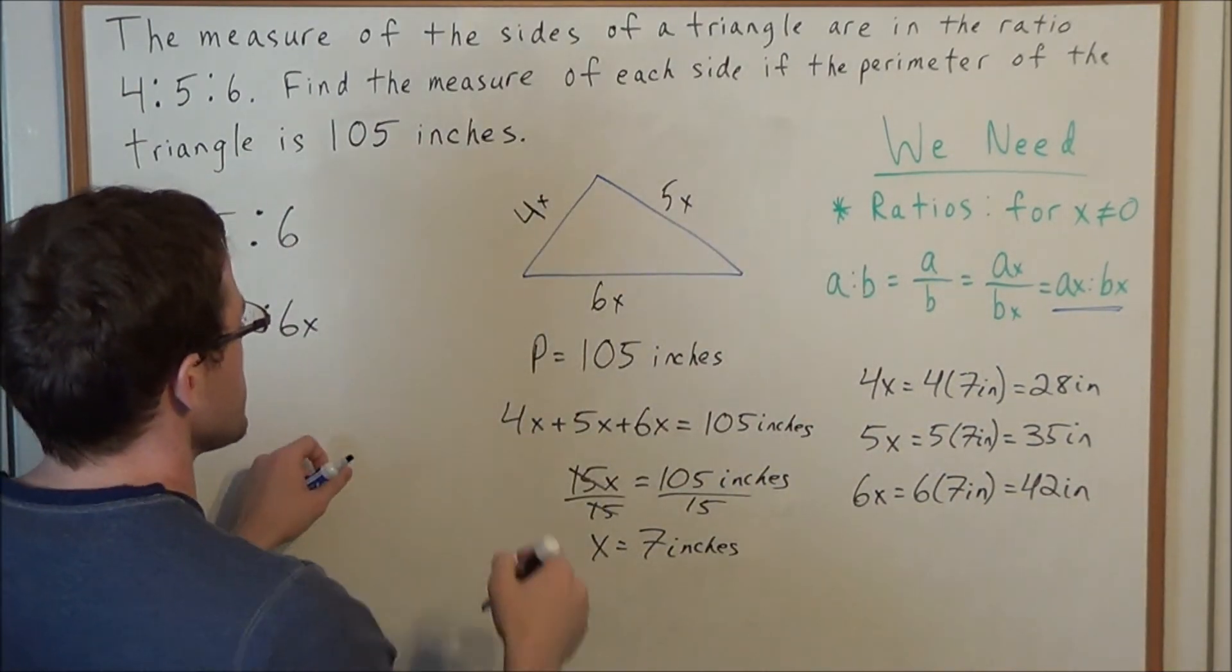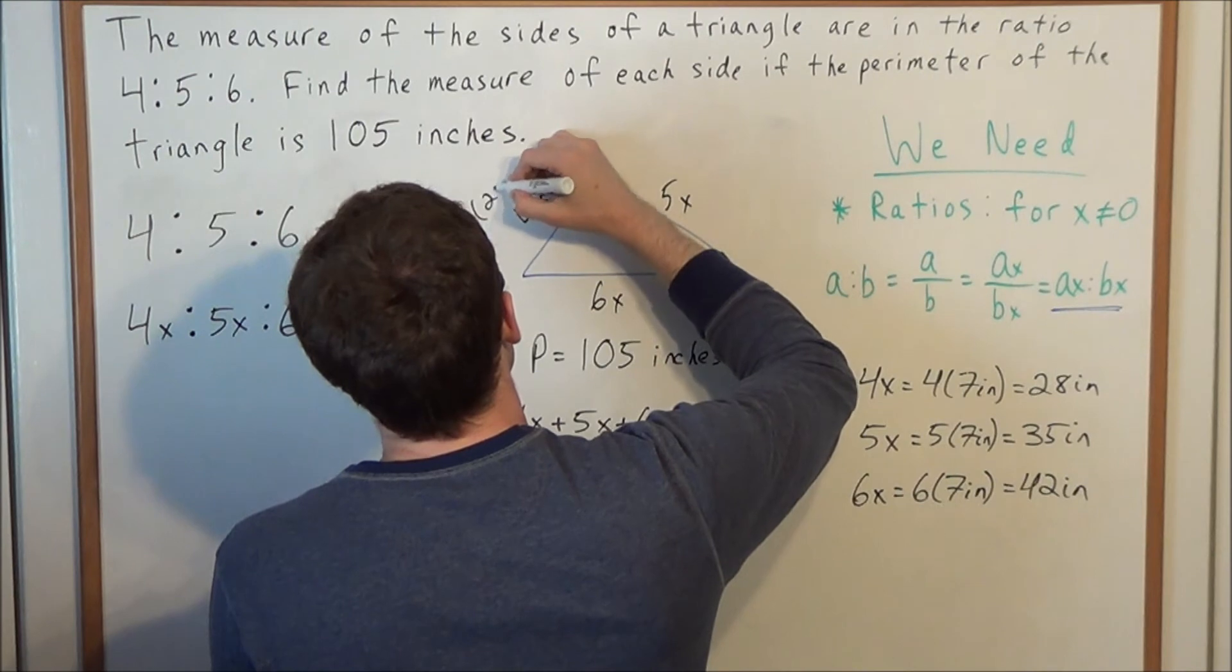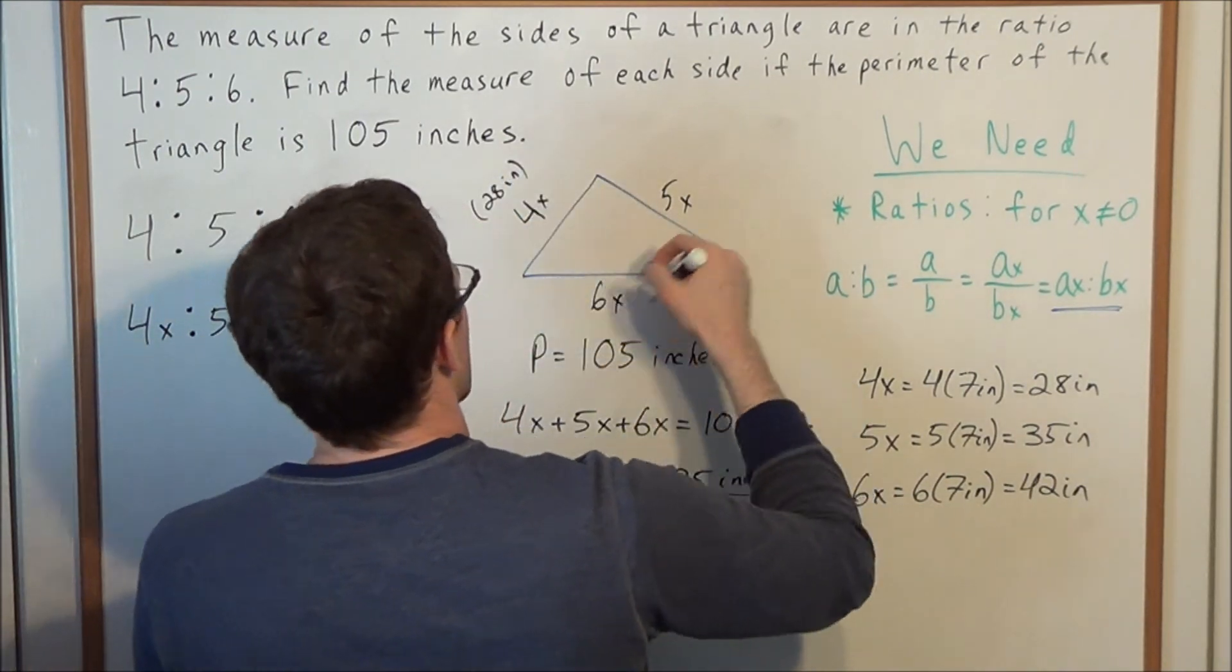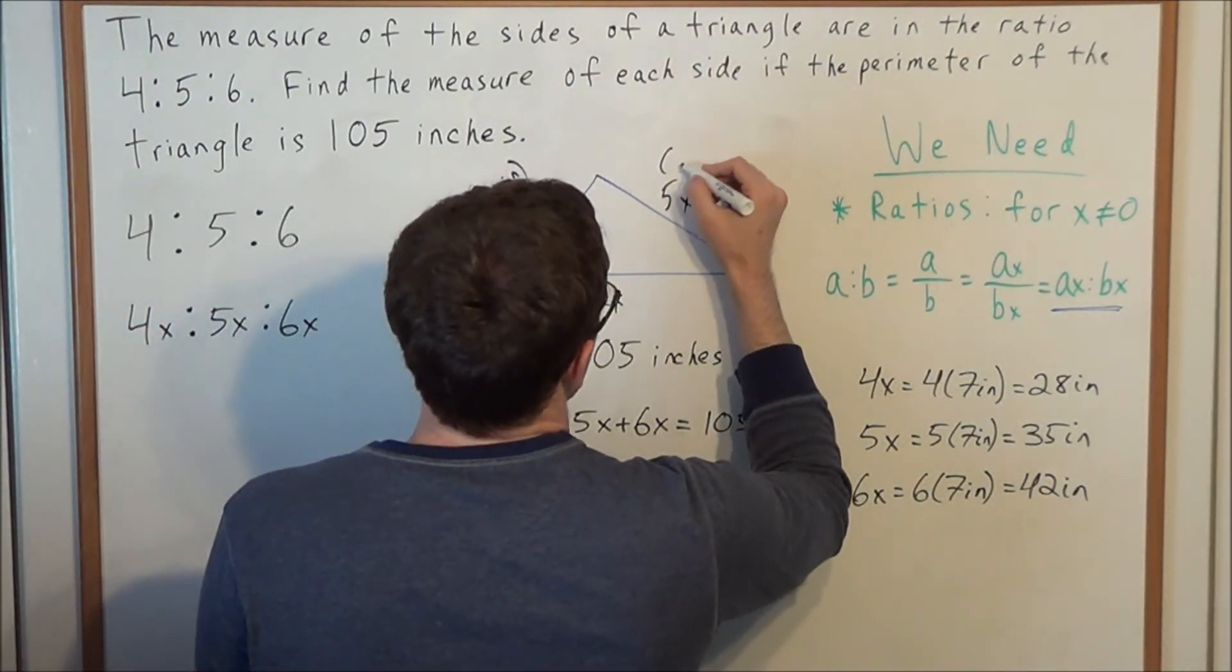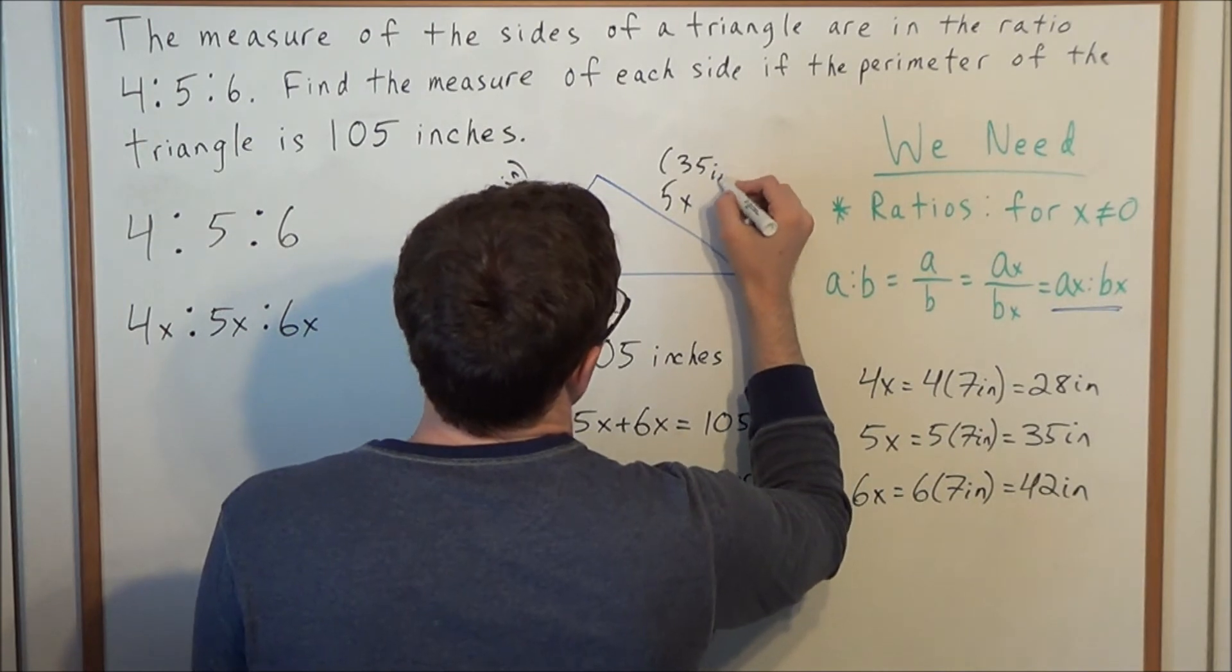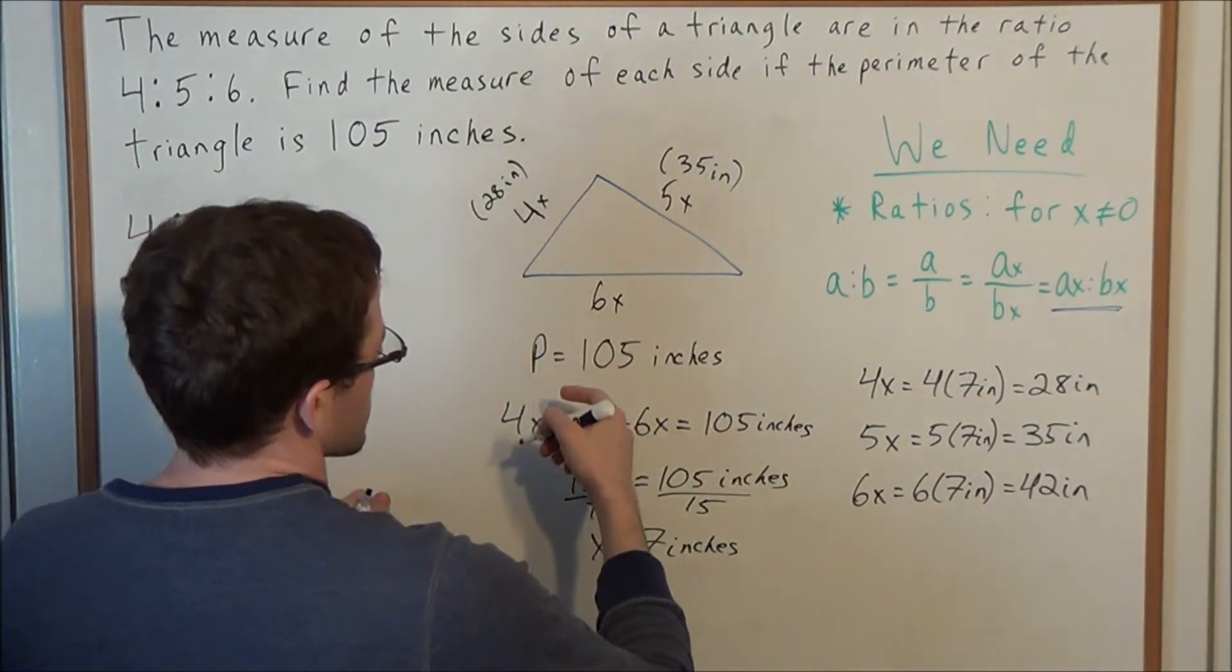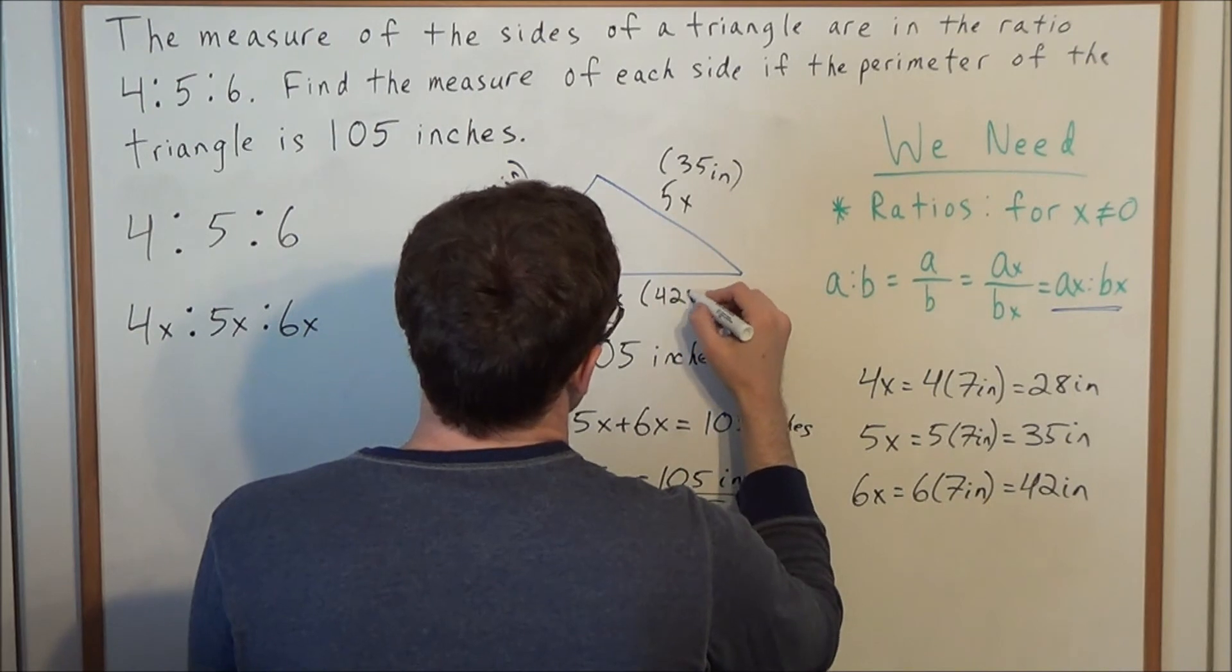So the 4x side is 28 inches, the 5x side is 35 inches, and the 6x side is 42 inches.